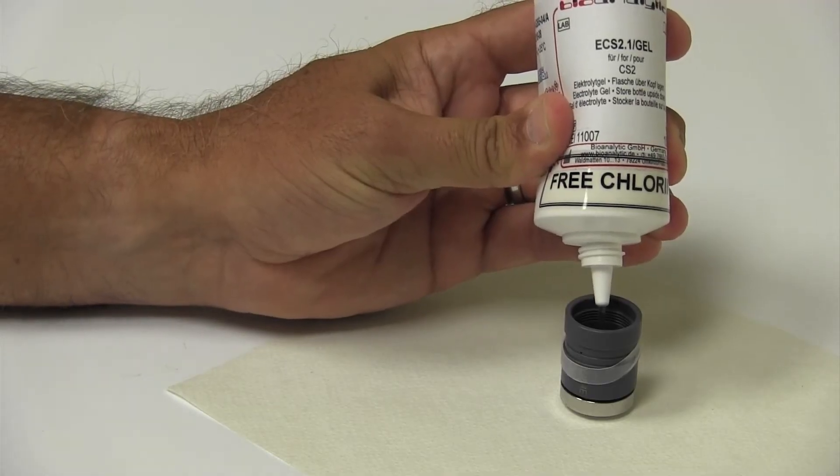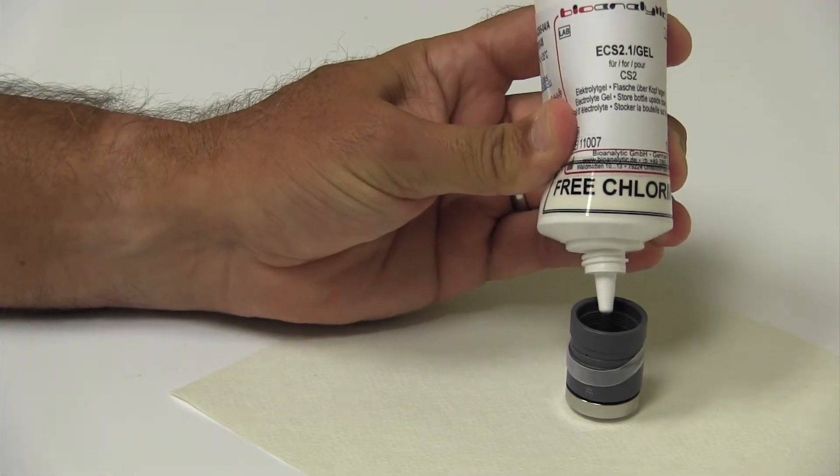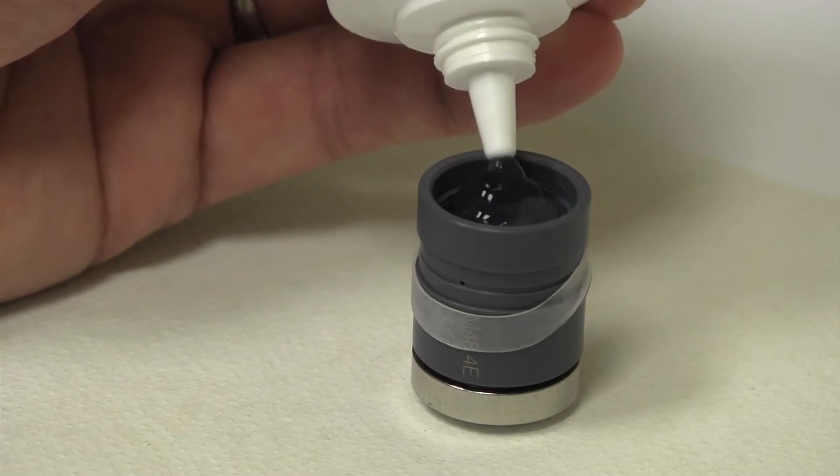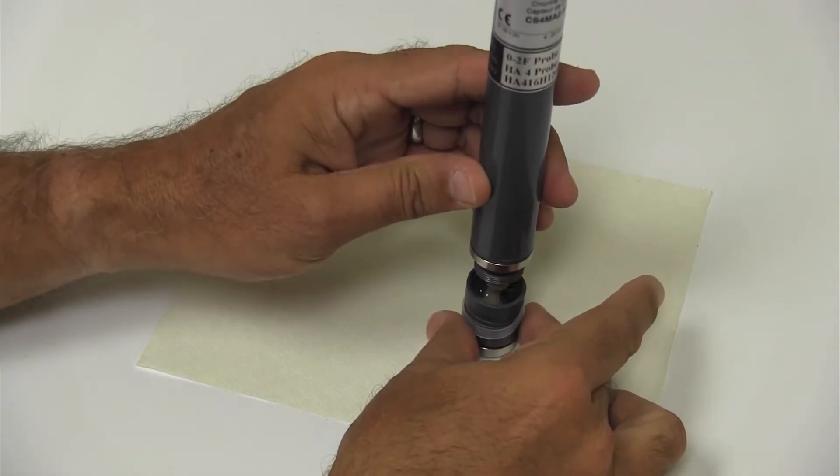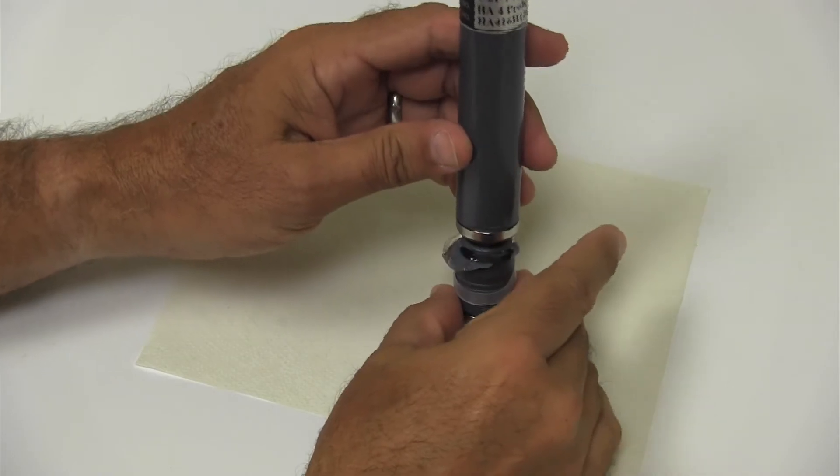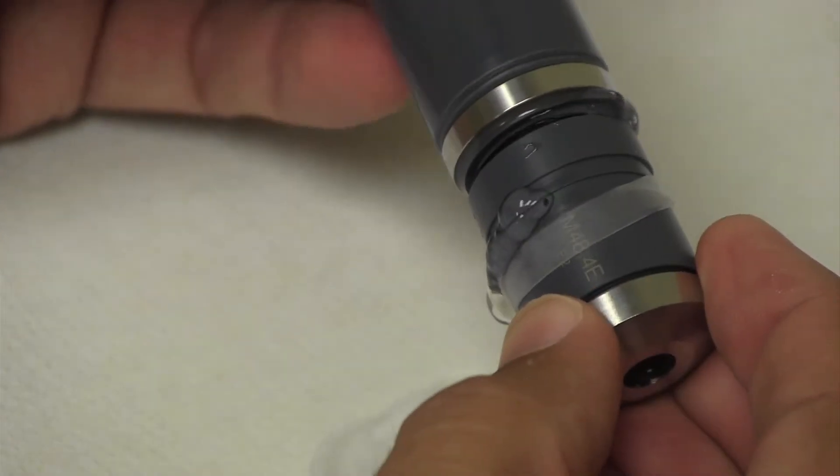Slowly fill the membrane cap to the edge with electrolyte gel, not allowing any air bubbles to form. Hold the probe body upright while inserting it slowly into the membrane cap, and screw the cap onto the probe.